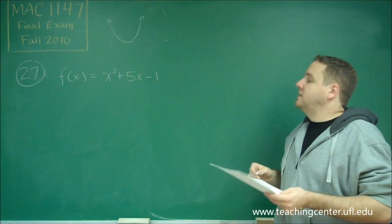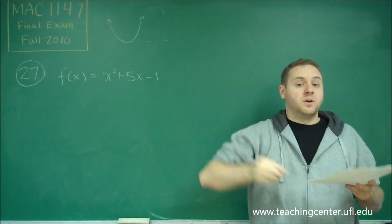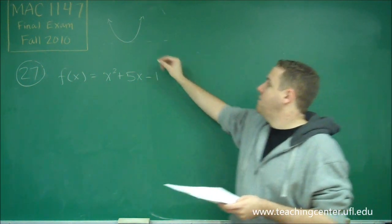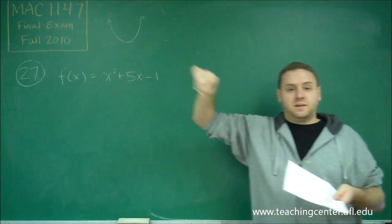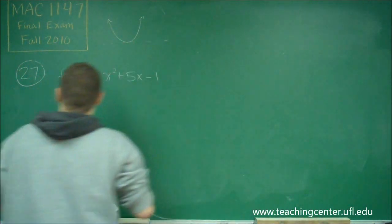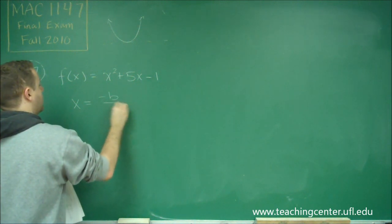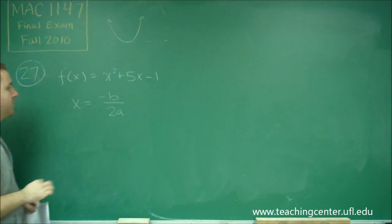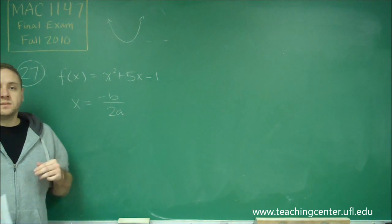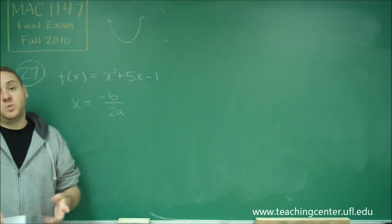We're clearly going to be ending at infinity because this goes up forever. We just need to figure out where this starts — what's the y value of the vertex. So we need to use the vertex formula. Remember that the vertex formula is x equals negative b over 2a, and that gives you the x value of the vertex. Once we have that, we can just plug it back in and find the y.